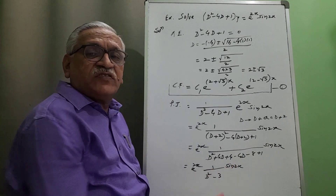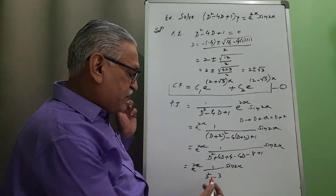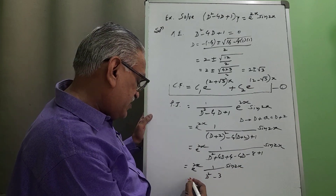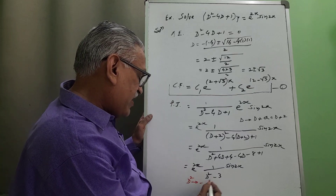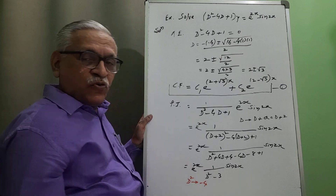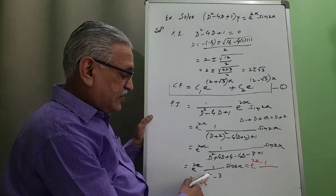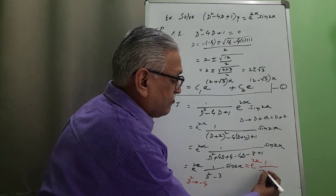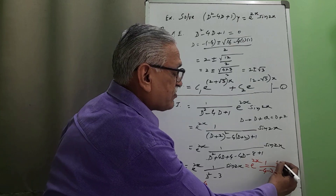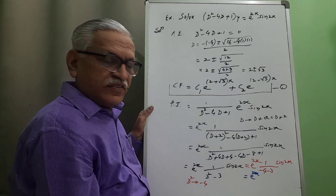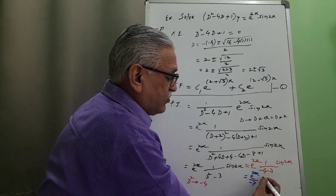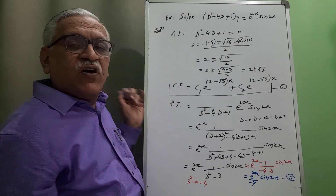As we are operating on a sine(ax) type term, we apply case number 2 for PI: the replacement rule is D squared replaced by minus a squared. Here a equals 2, so a squared equals 4; therefore D squared is replaced by minus 4. We have e raised to 2x times one over (minus 4 minus 3) into sine 2x, giving e raised to 2x times one over minus 7 into sine 2x.